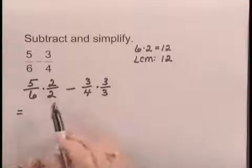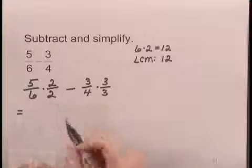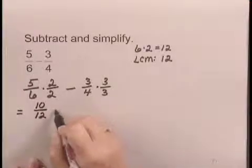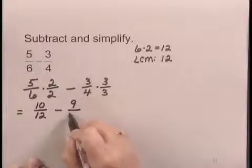In order to multiply, we multiply numerators, multiply denominators. So we have 10 over 12 minus 9 over 12.